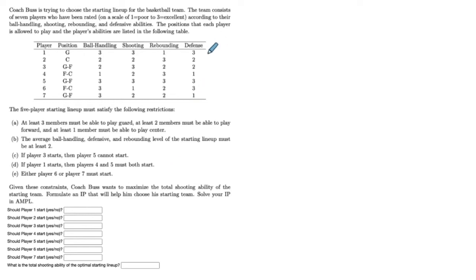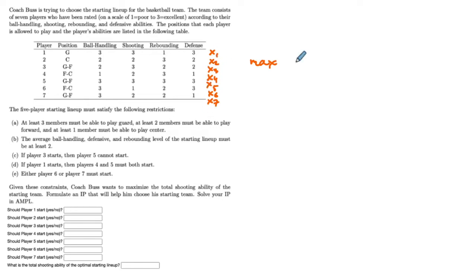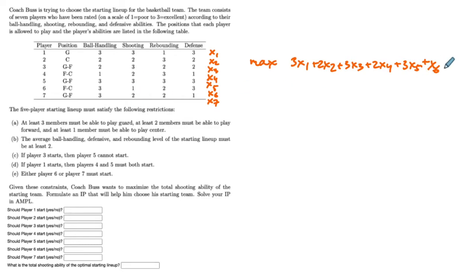In situations like this, it is natural to define decision variables that correspond to the available alternatives. We have seven players; we denote the corresponding binary variables indicating whether each player will start as x1 through x7. We then formulate the objective as maximizing the summation of each player's shooting ability multiplied by the corresponding decision variable: 3x1 + 2x2 + 3x3 + 2x4 + 3x5 + 1x6 + 2x7. This is the total shooting ability.